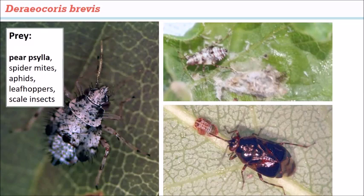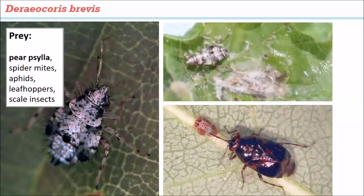Deraeocoris brevis is another predator in the orchard that you may not see often. It sort of looks like a stink bug, so people sometimes mistake it for a pest. But it's really a good beneficial — especially for those who grow pear trees, as it's one of the important predators of psylla.